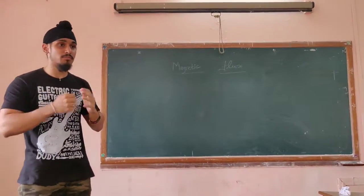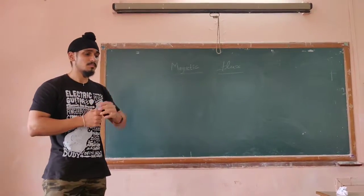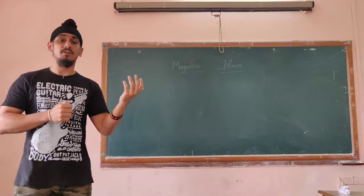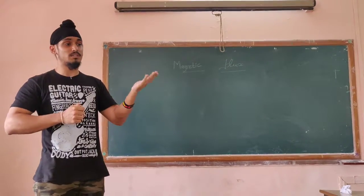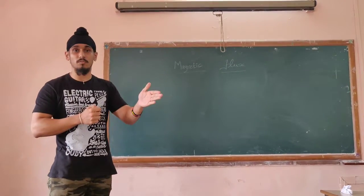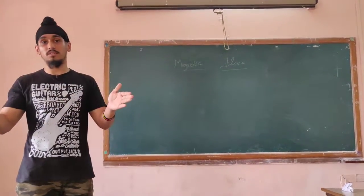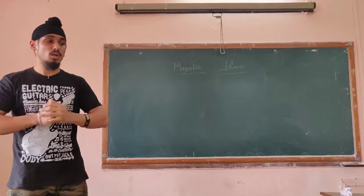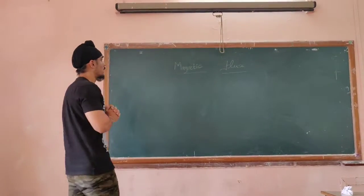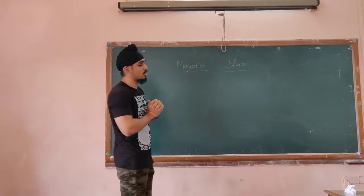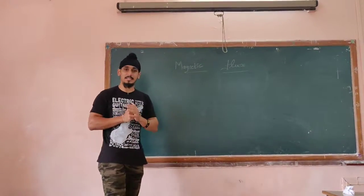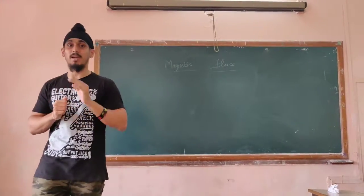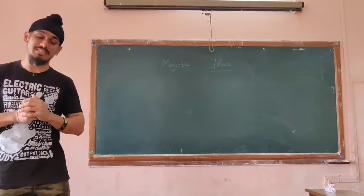What are magnetic field lines? Magnetic field lines are imaginary lines which start from the north pole of a magnet and end at the south pole of a magnet. If we want to study magnetism in detail, we should know what exactly magnetic flux means.